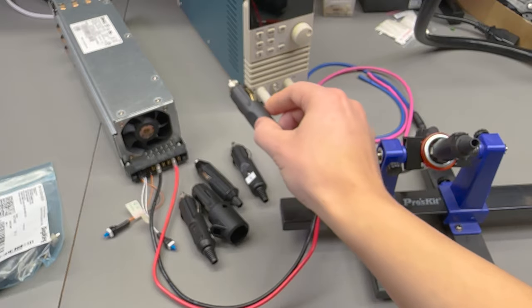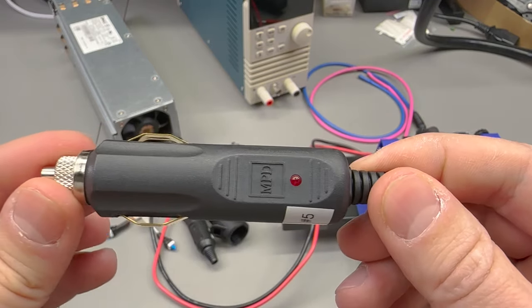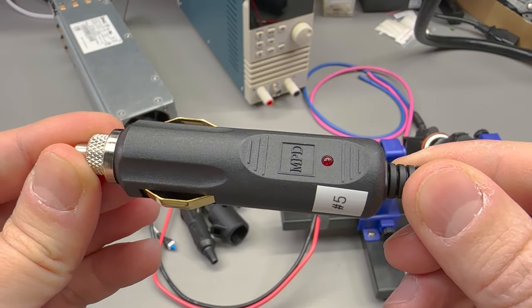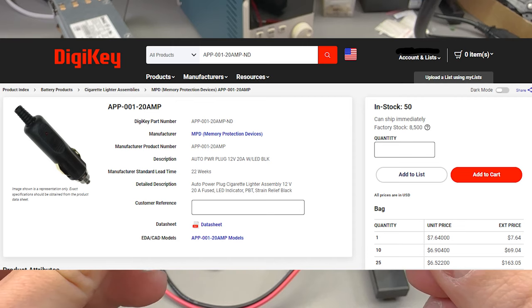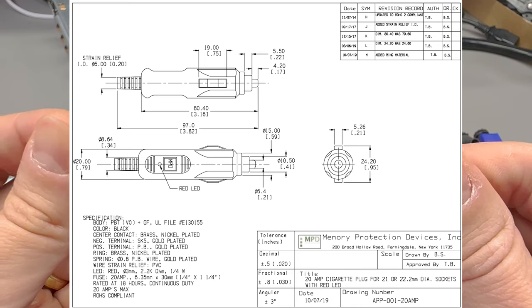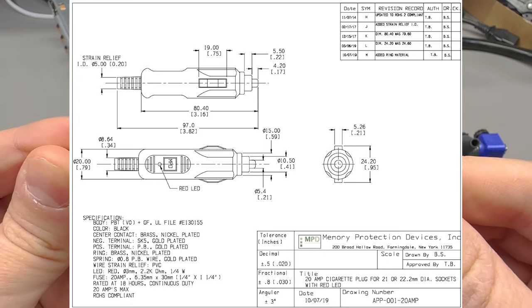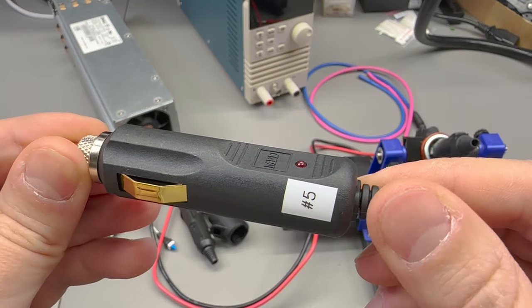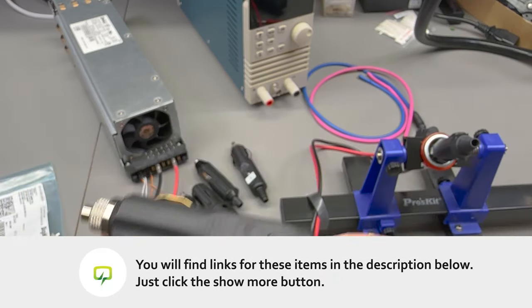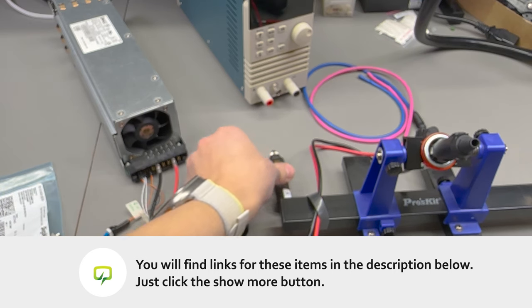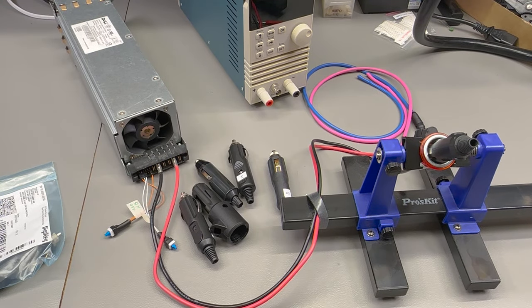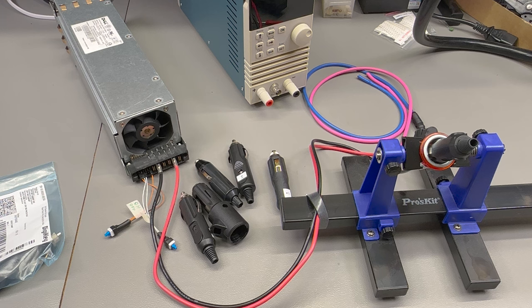Connector number five is actually the only one coming from a reputable distributor. I got this from DigiKey from this manufacturer. I'll put the part number on screen. This one actually has a data sheet with a rating of 20 amps for 18 hours continuous duty. Links for all of these connectors will be placed in the description below if you'd like to check them out.